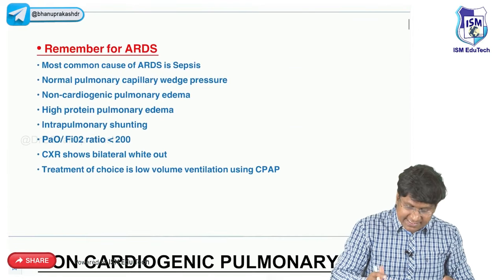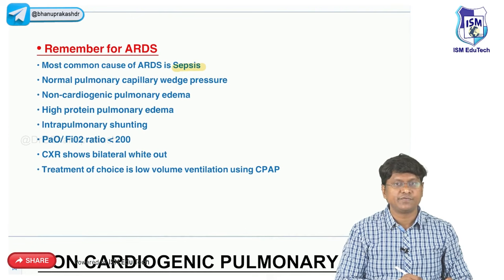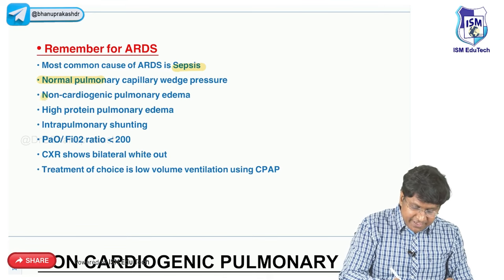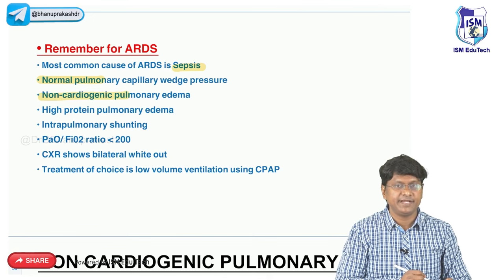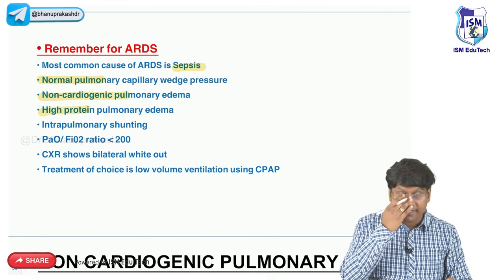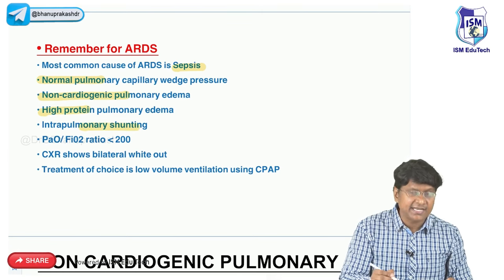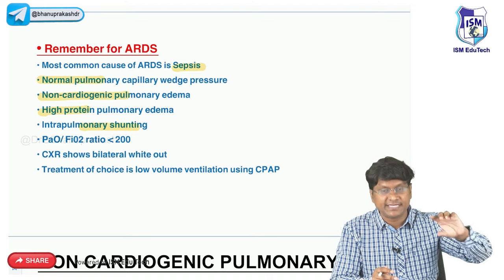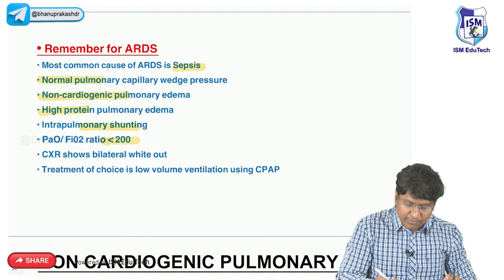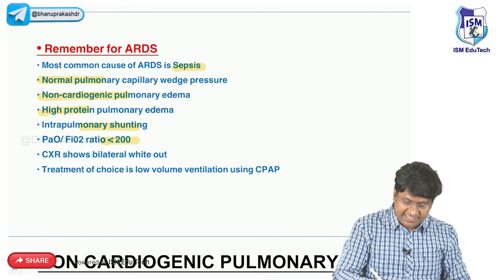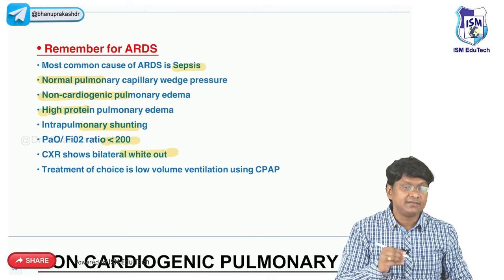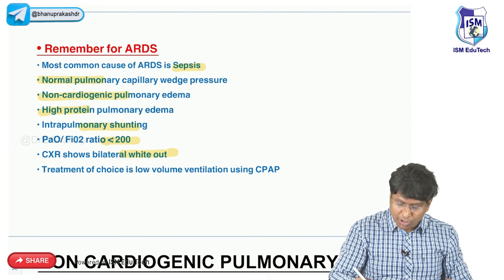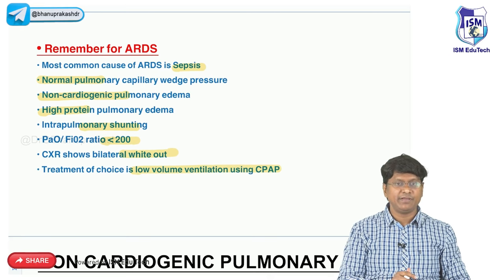Important points in ARDS: most common cause is sepsis; normal pulmonary capillary wedge pressure; the edema is non-cardiogenic pulmonary edema containing high protein content; there is intra-pulmonary shunting from pulmonary capillaries into the alveoli; PaO2/FiO2 is less than 200; chest X-ray shows bilateral white-out lung. Treatment of choice is mechanical ventilation or low volume ventilation using continuous positive airway pressure.